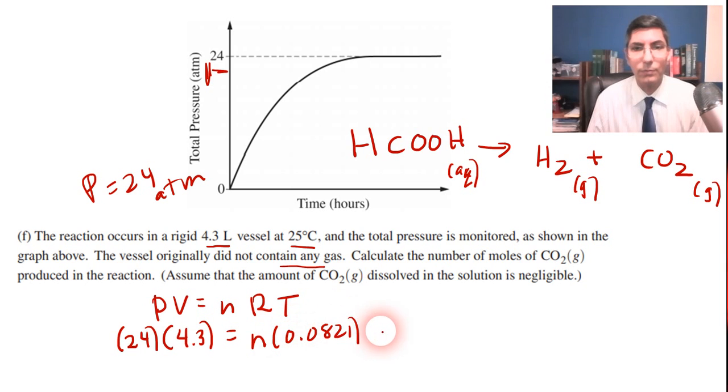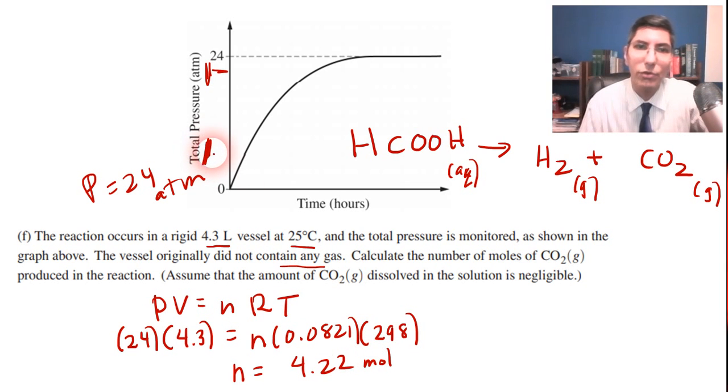We have all the ingredients in order to plug into PV equals NRT. So pressure is 24 atmospheres. The volume is 4.3 liters. We're trying to find the moles. R is 0.0821. And the temperature, 25 degrees Celsius, is 298 kelvins. So when you solve for N using algebra, the answer I got was about 4.22 moles. Now, be very careful here, because this is not the answer. This is the total number of moles. Because look at this. This is the total pressure. And the total pressure is a function of this stuff right here, plus the carbon dioxide.